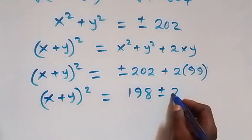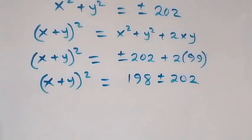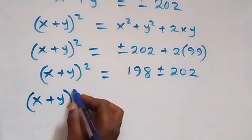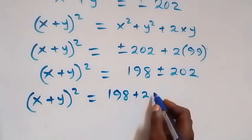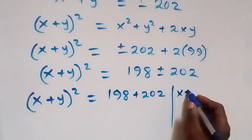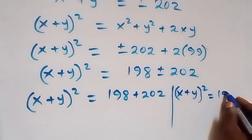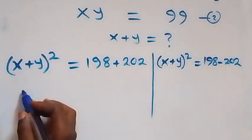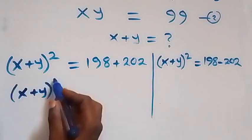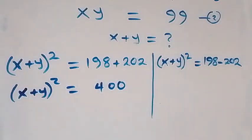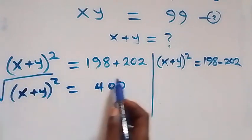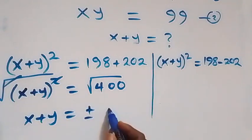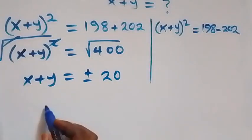This gives two possible cases: (x plus y) squared equals 198 plus 202 equals 400, or (x plus y) squared equals 198 minus 202 equals negative 4. For the first case, taking the square root of 400 gives x plus y equals plus or minus 20.